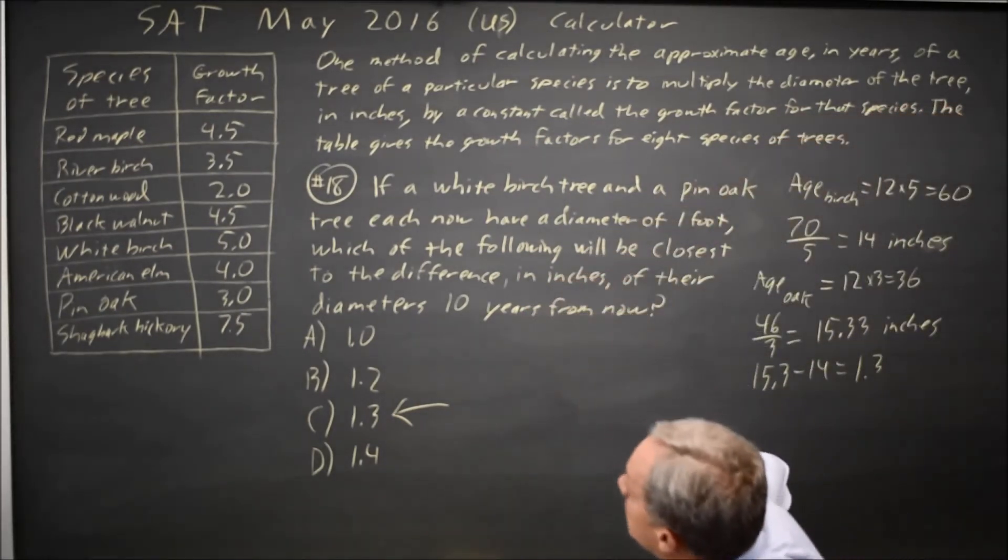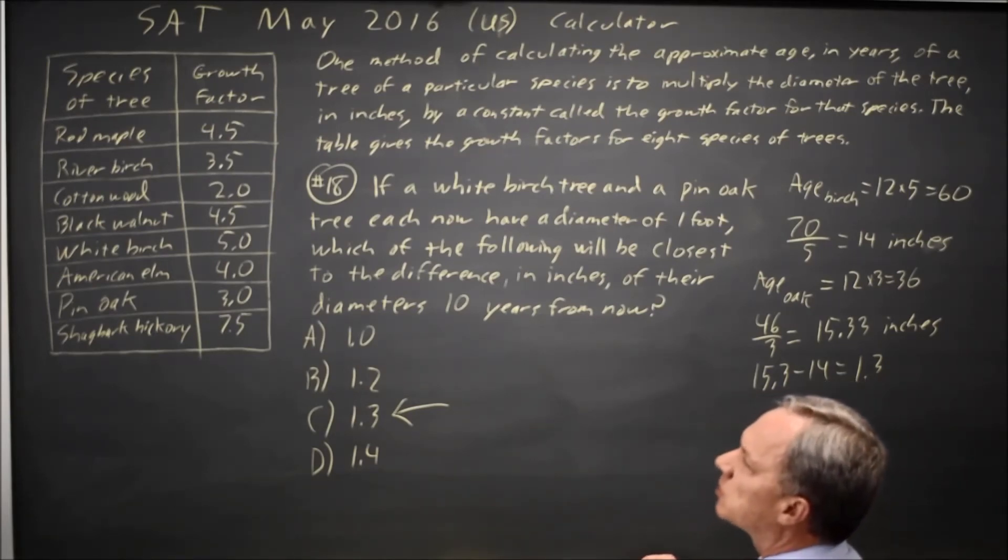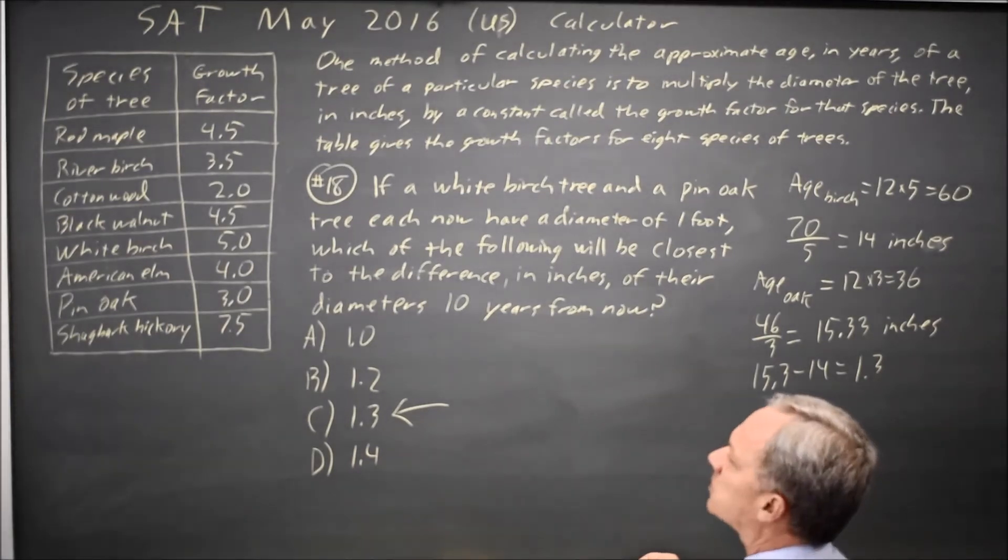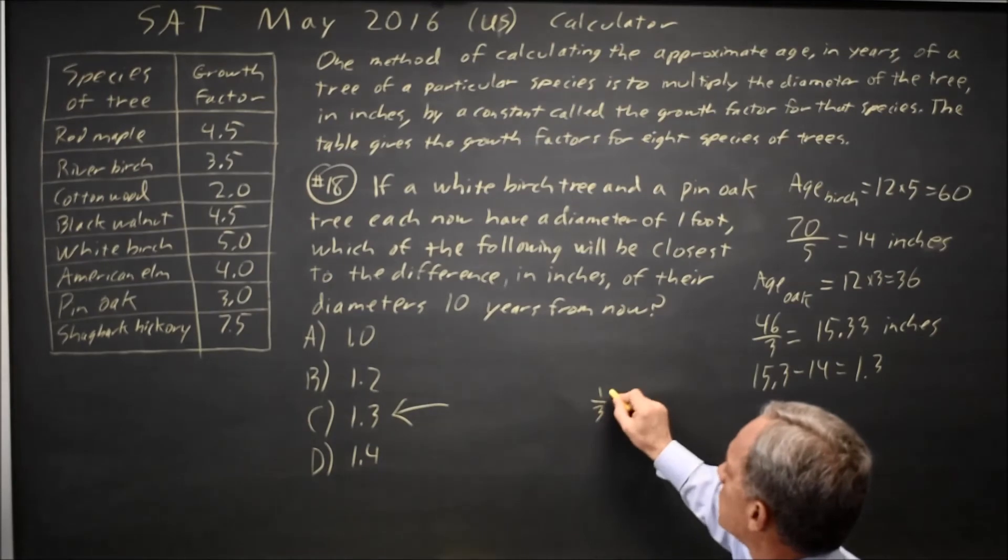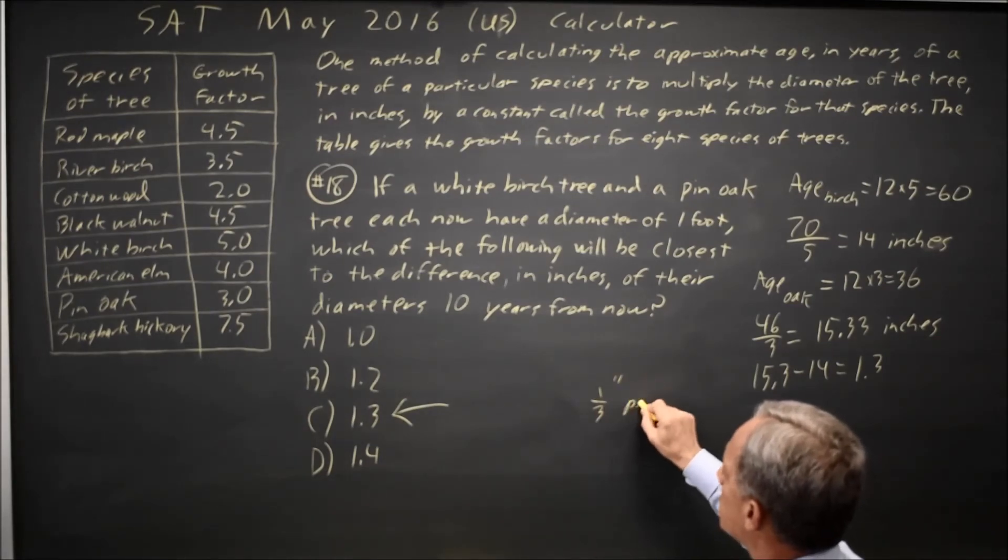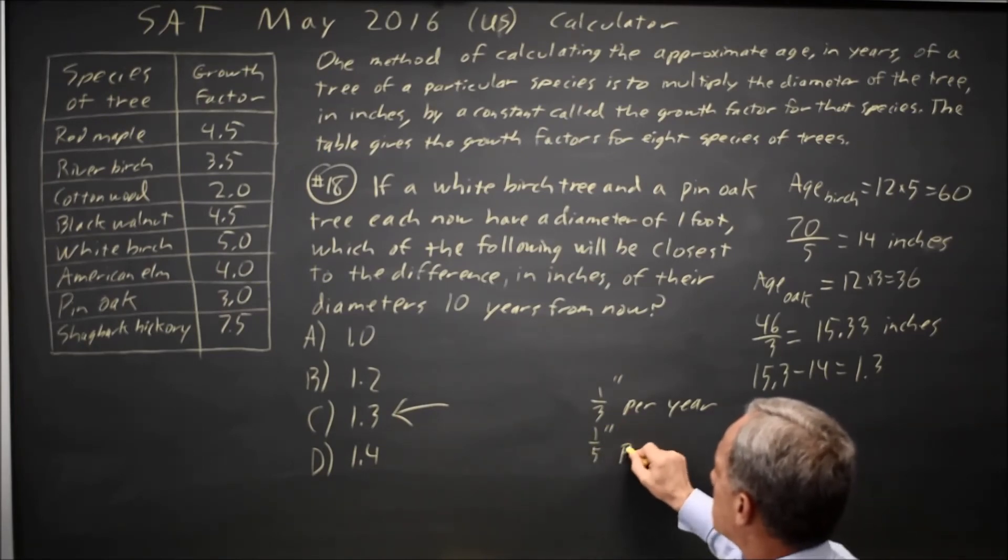Alternatively, you can say that since the pin oak grows 1 inch every 3 years, the pin oak adds one-third inch per year. And the white birch grows 1 inch every 5 years, so that's one-fifth inch per year.